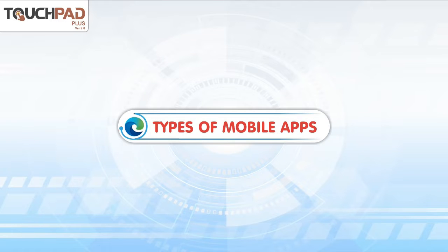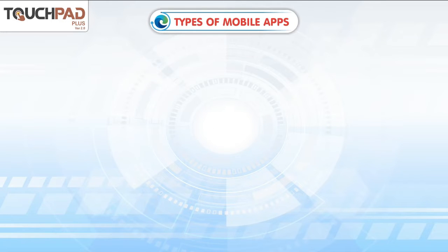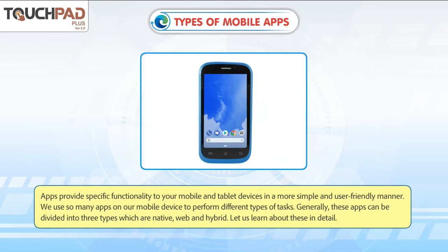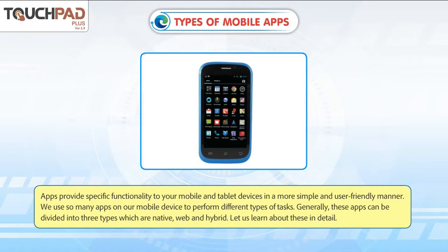Types of Mobile Apps. Apps provide specific functionality to your mobile and tablet devices in a more simple and user-friendly manner. We use so many applications on our mobile device to perform different types of tasks. Generally, these apps can be divided into three types which are native, web and hybrid. Let us learn about these in detail.